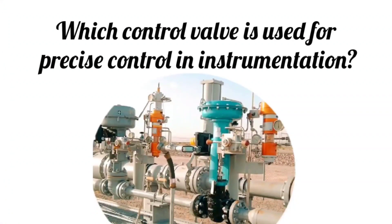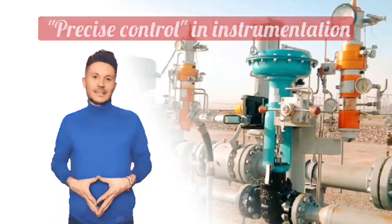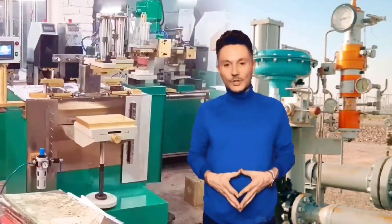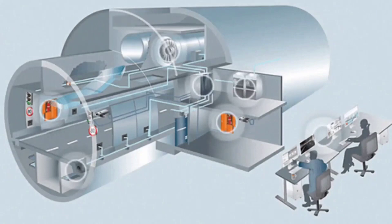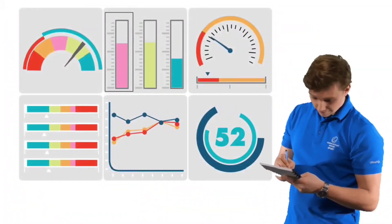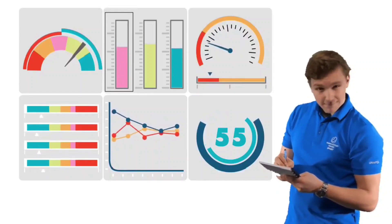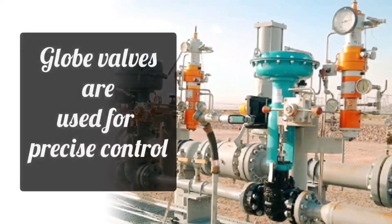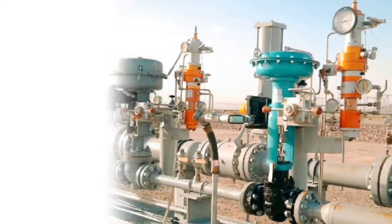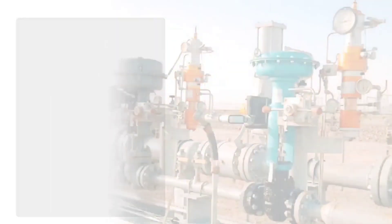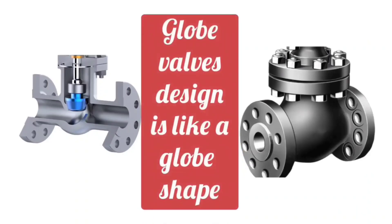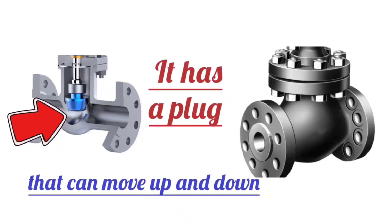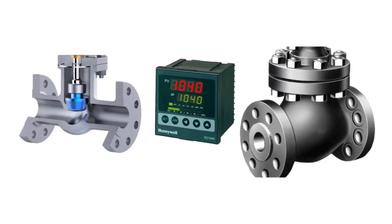Which control valve is used for precise control in instrumentation? Precise control in instrumentation means that you can control the parameters of a system very accurately and consistently. This is essential to the control system because in many industrial processes, variations of parameters such as temperature, pressure, flow rate, or level can produce significant effects in the process. Globe valves are used for precise control, and these valves are especially used in flow control applications. The design of globe valves makes them suitable for accurately regulating the flow rate. Globe valves have a globe shape design with a plug that can move up and down, and the parameters are controlled at a set point.